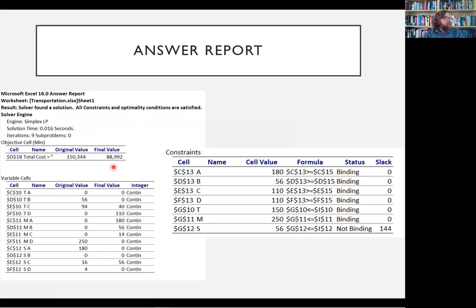The original answer I had here was 150,000 and the optimal answer is 88,000. So a significant savings. So then it tells us how many units should be shipped from T to A, which is zero. T to B is zero. T to C, 40 units. T to D, 110 units, et cetera.